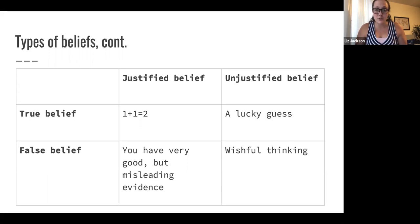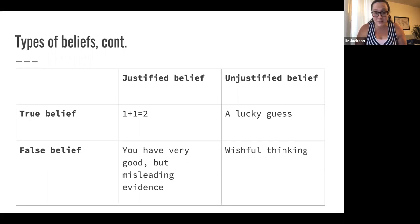We have these two distinctions, and all four combinations can map onto each other. You can have a true belief that's justified — for example, one plus one equals two, or checking your weather app, believing it will rain tomorrow, and it does rain tomorrow. That would be a justified true belief. But you can also have true beliefs that aren't justified if you have a lucky guess — say you shake your magic eight ball, and by luck it actually does rain tomorrow. That would be a true belief, but it's not justified because you don't have a good basis for it.